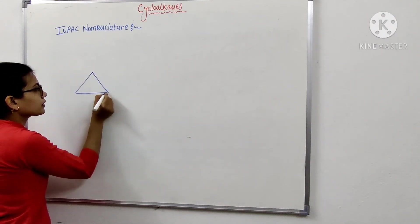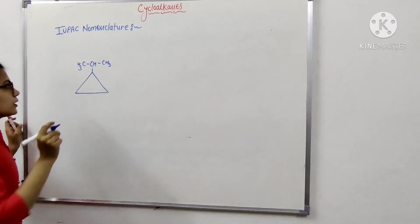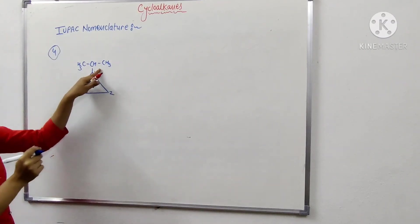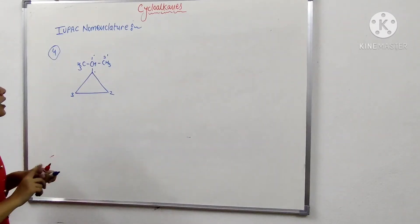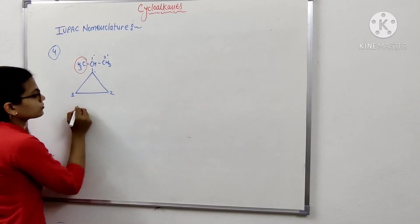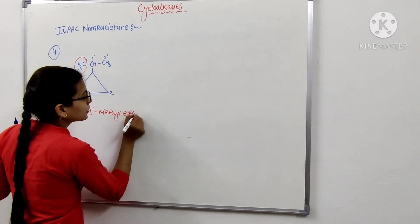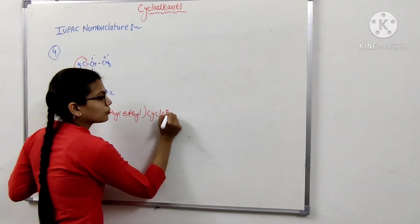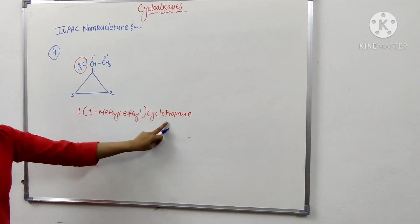For example, consider a three-member ring connected to CH with CH3 and CH3 groups. The numbering in this structure is 1, 2, and 3. The groups present on the first carbon are a methyl group (CH3) and an ethyl group. So it is known as 1,1-dimethyl-ethylcyclohexane — or more precisely, 1-methyl-1-ethylcyclohexane.